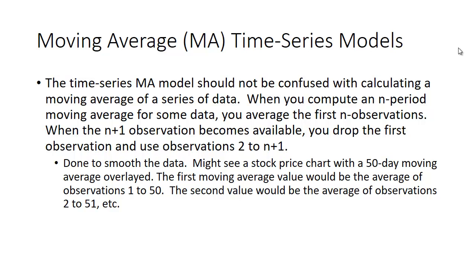And I have a video that actually discusses this. It's pretty straightforward. It doesn't require a lot of high-tech math. It's just adding and division. It's just simple averages. And the reason this is done is to smooth the data. So you might see a stock price chart with a 50-day moving average overlaid over the actual price of the stock. And the way the first moving average value is computed is it's the average of, for example, observations 1 to 50. And then the second value would be the average of observations 2 through 51, etc.